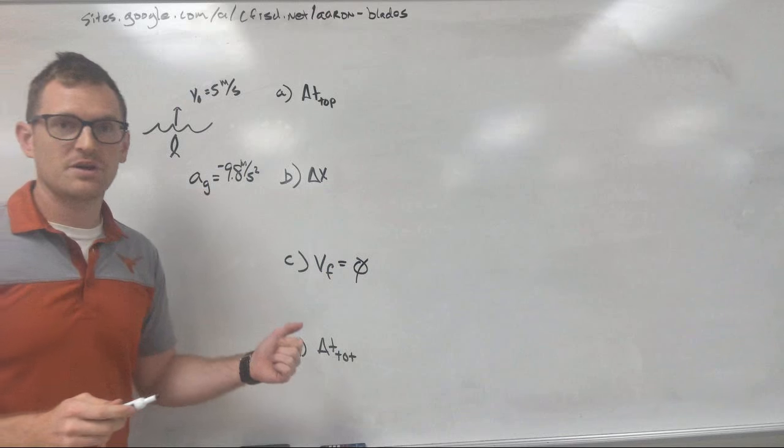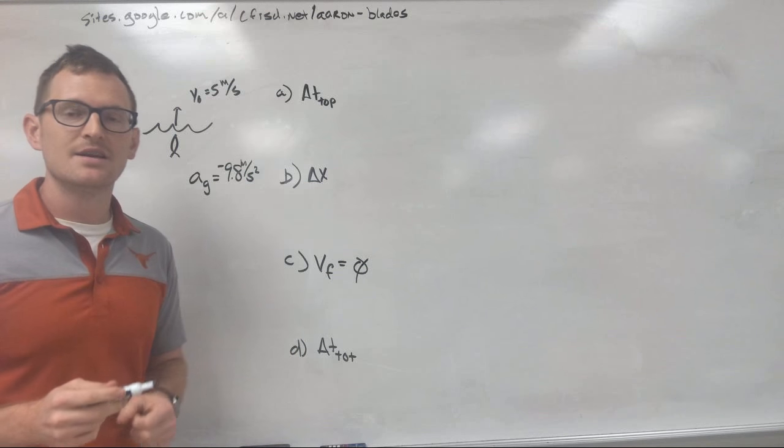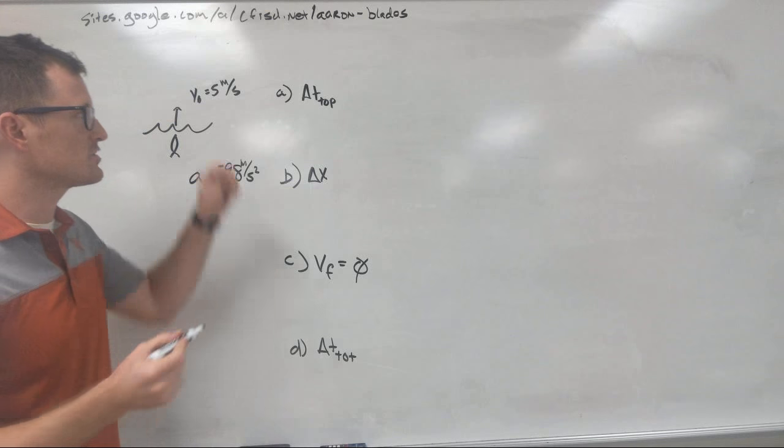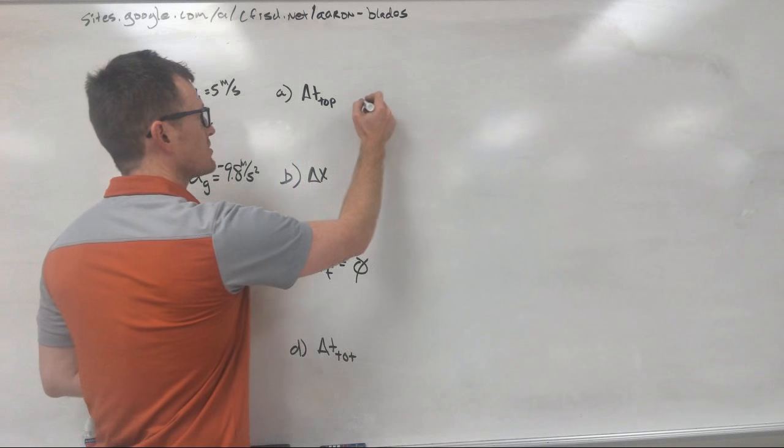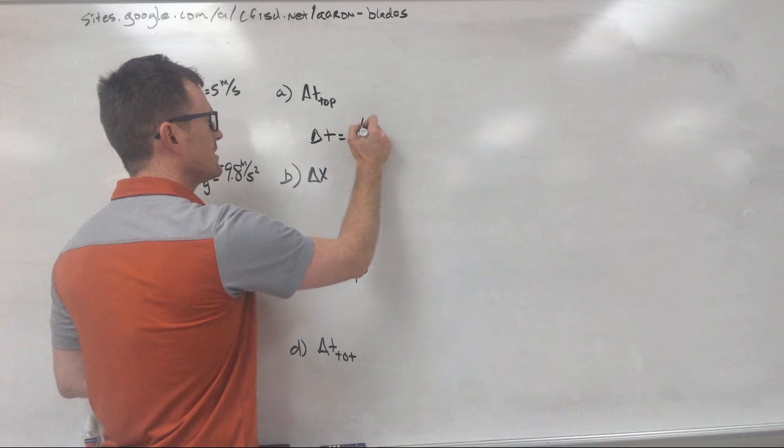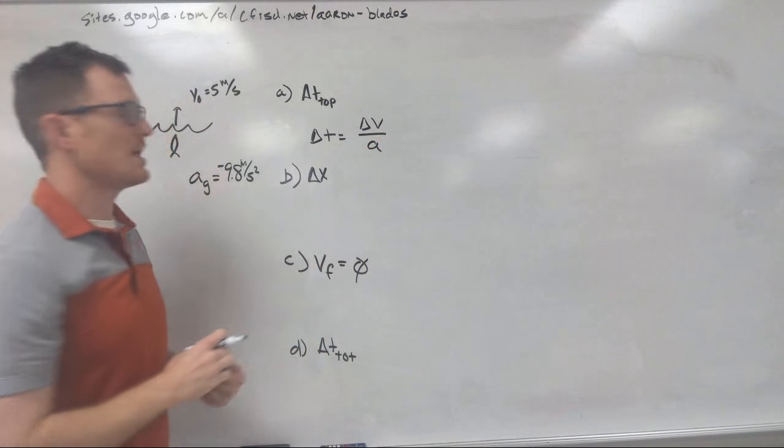We needed to know that first because now we can use the almighty delta V to help us solve some of our equations. So let's start with letter A. Our delta T is going to be solved by using this equation: delta T equals delta V over A.